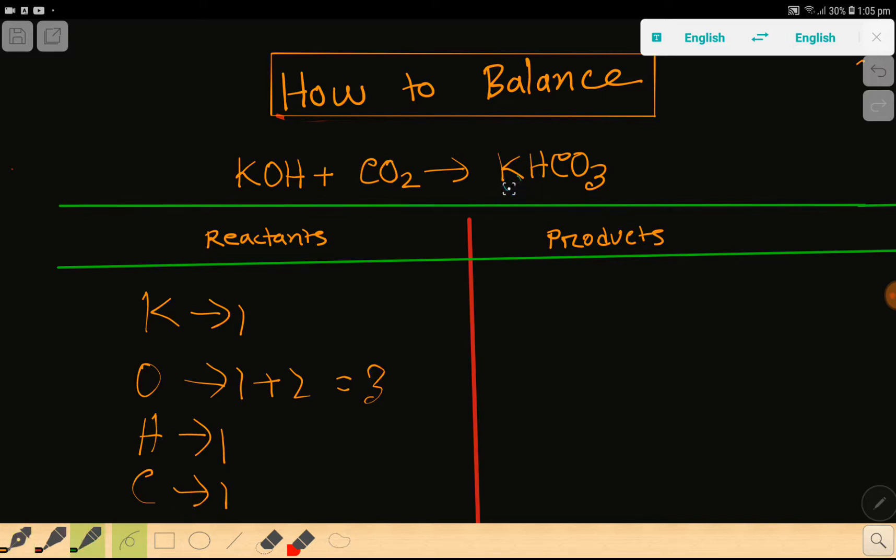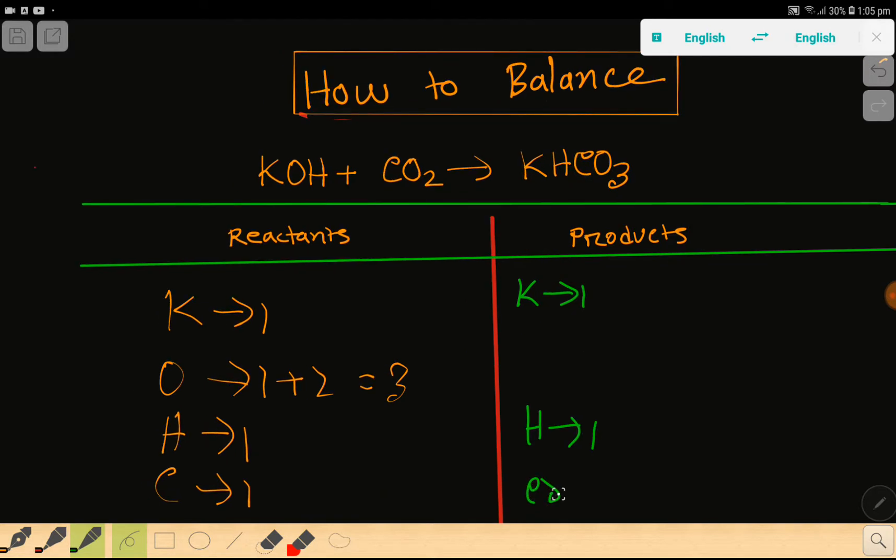Now look at the product side. We have potassium, so I need to write the number of potassium. Then we have hydrogen, then carbon. Let me write the number of carbon here. Carbon is one, then we have oxygen which is three.